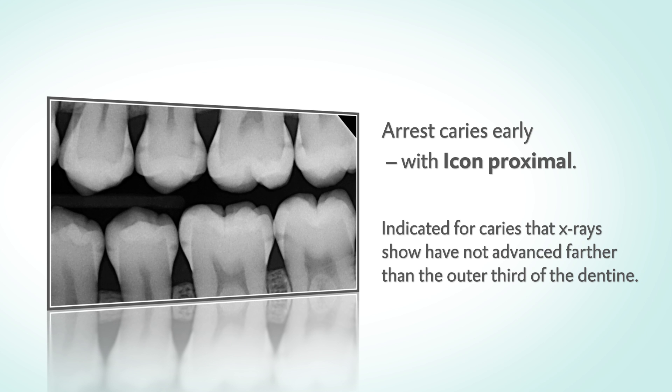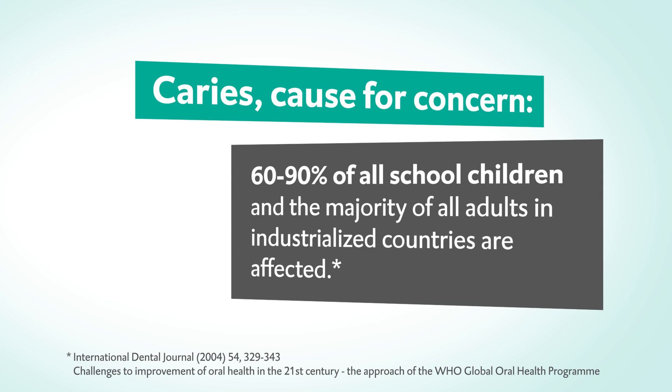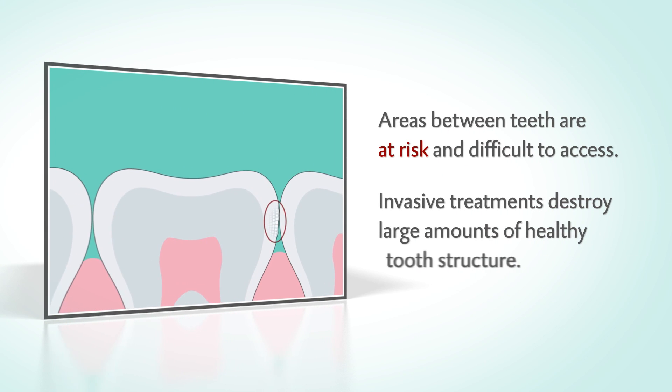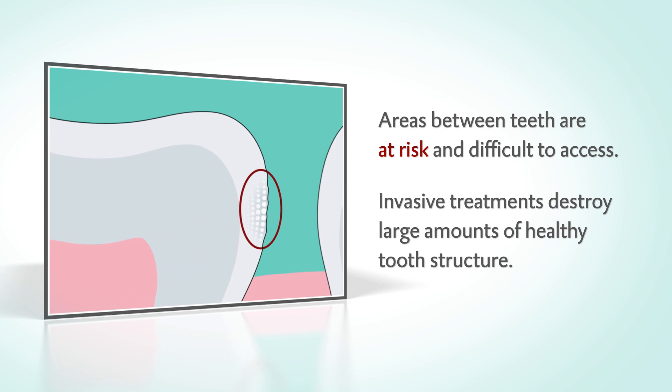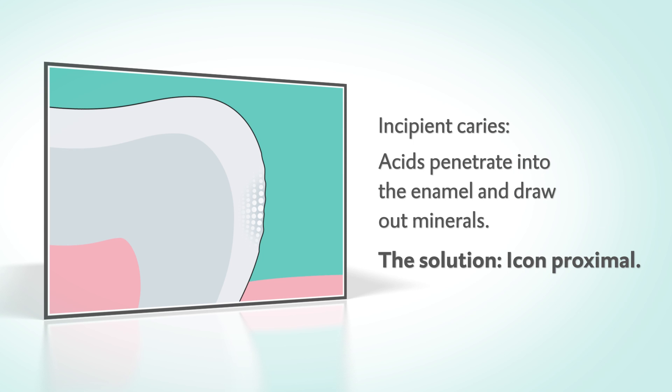Caries between teeth is the number one dental disease. Young people are especially affected. The difficult-to-reach proximal areas are particularly at risk. Drilling destroys lots of healthy tooth structure. With incipient caries, acids draw minerals from the enamel, making it porous.